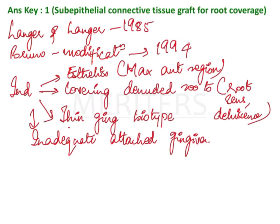Second indication is covering denuded roots — when there is root hypersensitivity, dehiscence, or fenestration causing root exposure, a graft can be placed there. Third is a thin gingival biotype; unlike the maxillary gingiva which generally has a thick biotype, a thin biotype means placing the graft will increase the thickness of the gingiva.